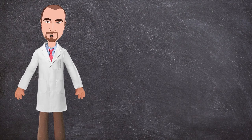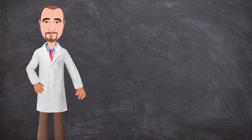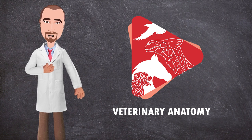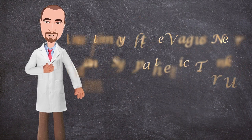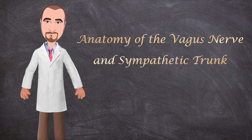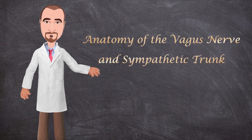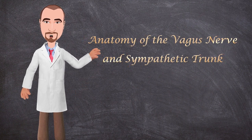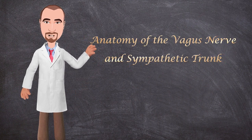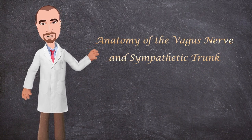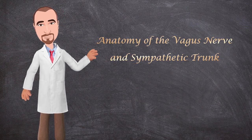Hello everyone and welcome to another anatomy video. This is Dr. Ian from the Veterinary Anatomy channel. In this video we will dissect the autonomic nervous system inside the thorax cavity — the vagus nerve and sympathetic trunk and other associated structures. So let's get started.